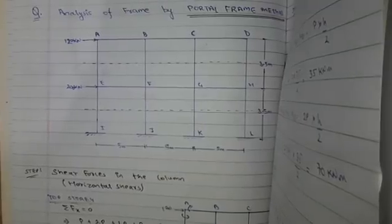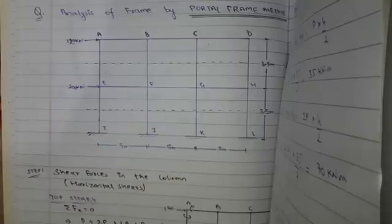The next step is to find the moment at the ends of the beams. The beams are AB, BC, CD, EF, FG, and GH. For the top story, M_AB = M_BA = M_BC = M_CB = M_CD = M_DC, since the forces acting on these are equal. Using p × h/2, we get a value of 35 kilonewton-meters.